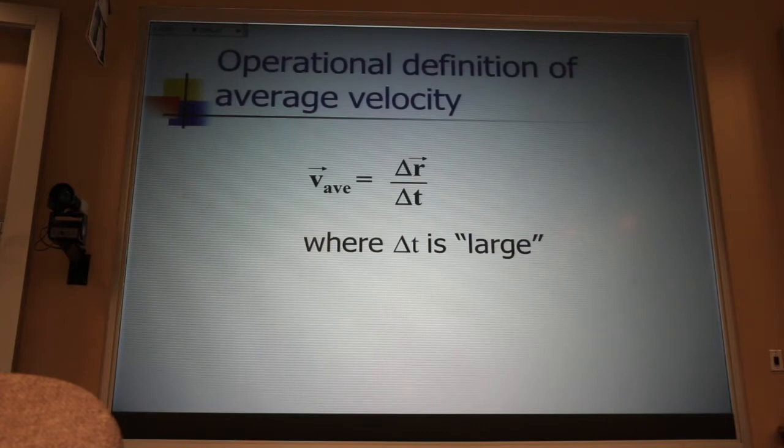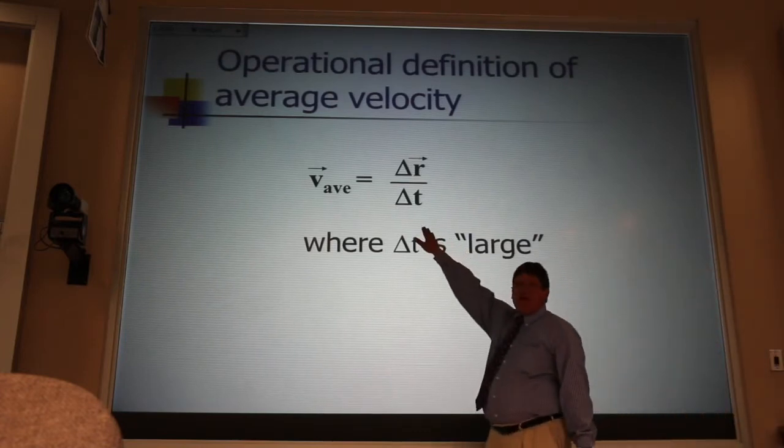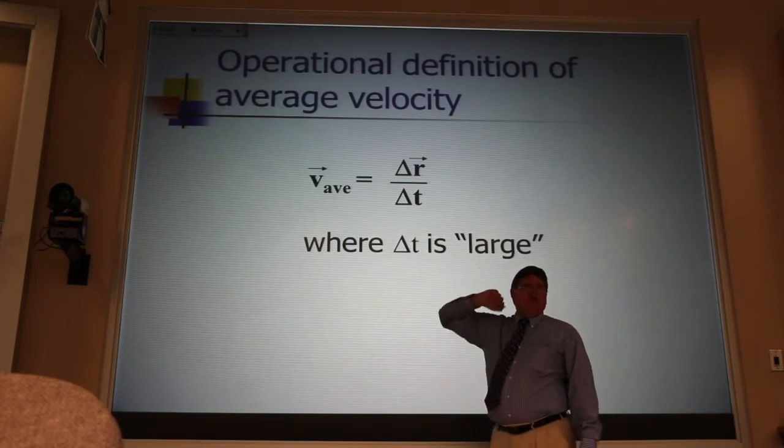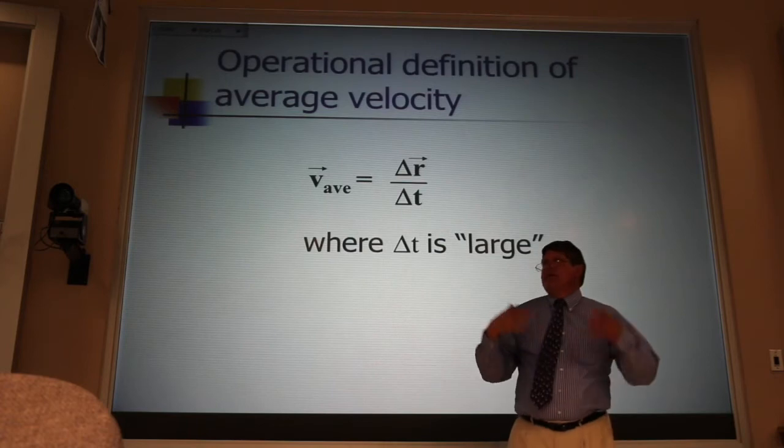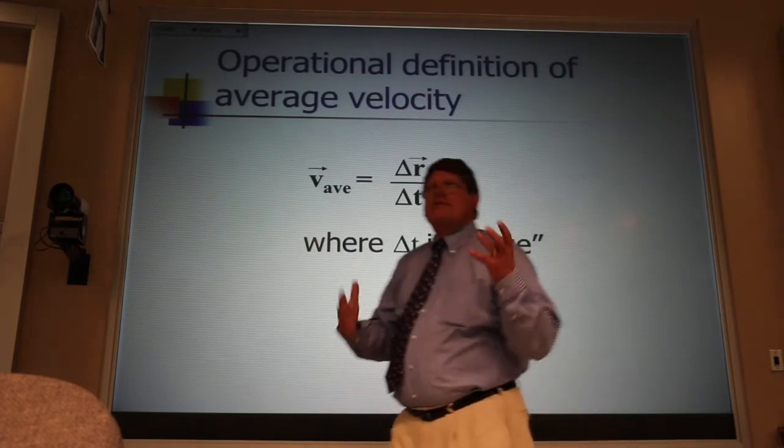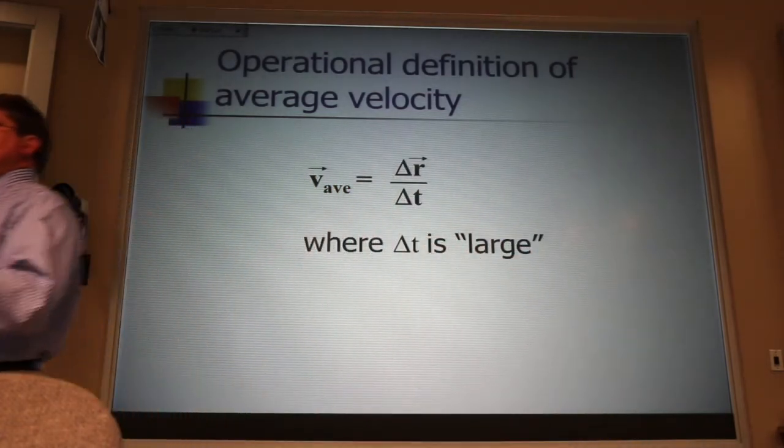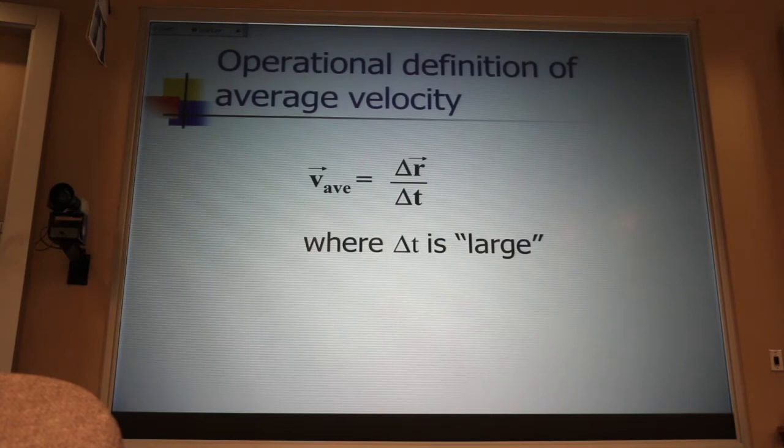Now, the operational definition for average velocity looks like the general definition for velocity. But with the caveat that delta t can be large. Large enough that you can speed up, slow down, stop for a stop sign.